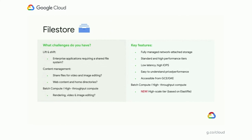We're very excited about an announcement: less than a year ago, we acquired a company called Elastifile, which had a really powerful scale-out file store product. We're excited to have that now launching as a new tier of Filestore called the high scale tier. This will let customers scale to hundreds of terabytes, tens of gigabytes of throughput, hundreds of thousands of IOPS, and really help customers with large-scale web, high-throughput media rendering, and batch workloads. Very excited about that.